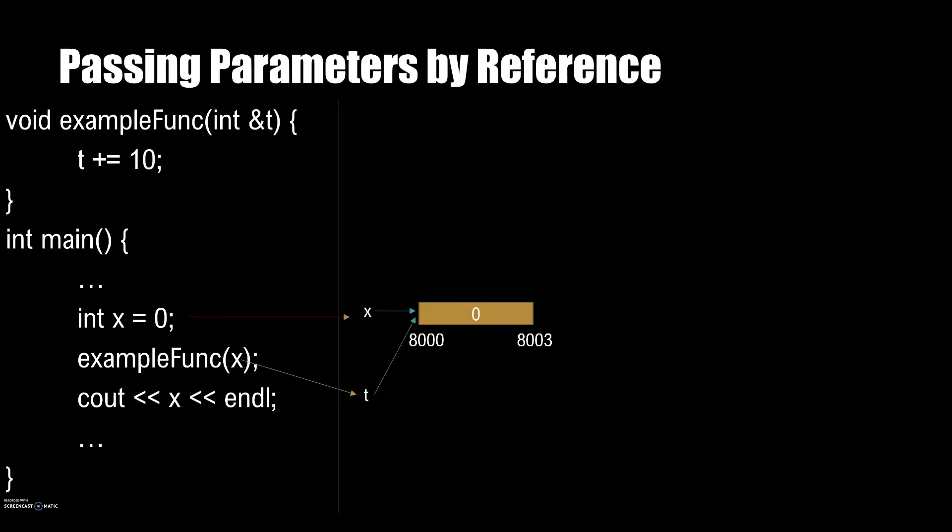Now finally, let's take a look at passing parameters to functions by reference. When we pass a parameter to a function by reference in C++, we are essentially handing the address of the variable to the function. A copy of the variable being passed to the function is not made in this case.